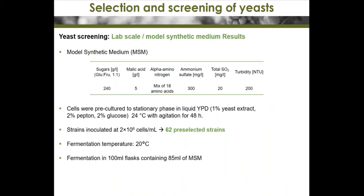Other phenotypic traits were then determined with micro-vinification at lab scale. We determined fermentation range, rates, and capacity; sulfur dioxide production; low production of volatile acidity; desirable flavor production; and general wine quality. First fermentations were performed on a model synthetic medium that mimics natural grape must.